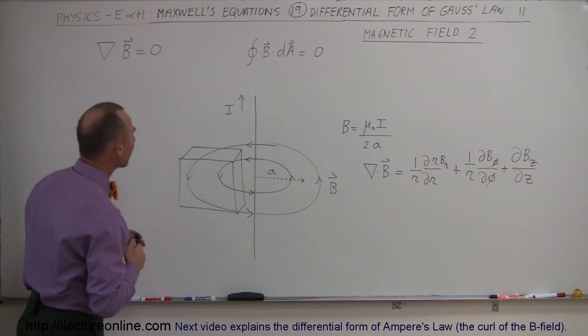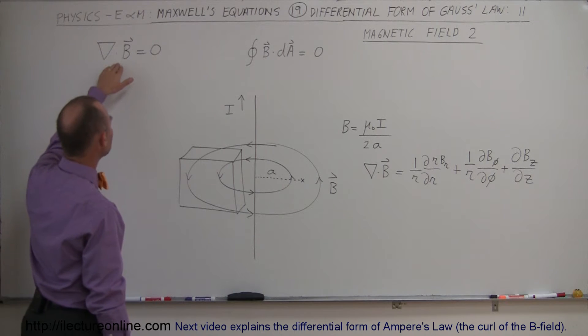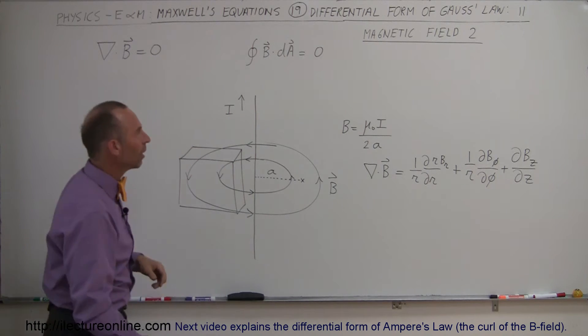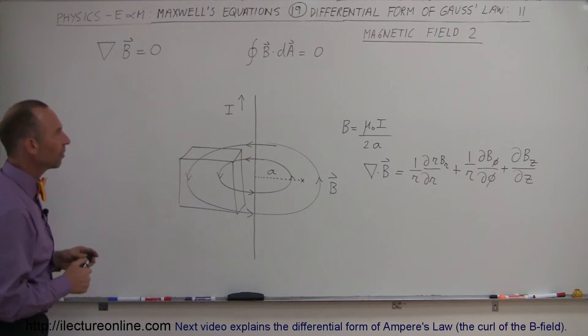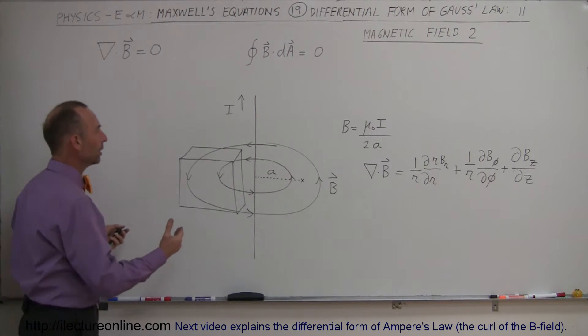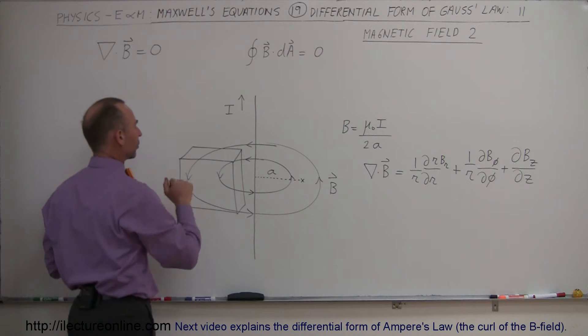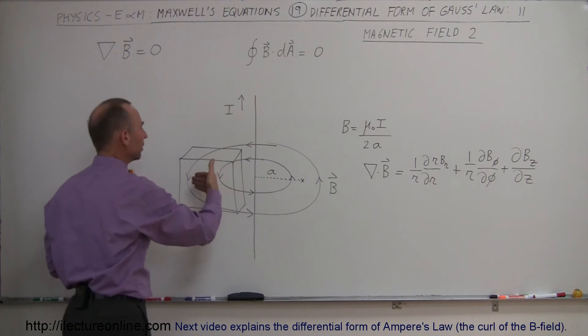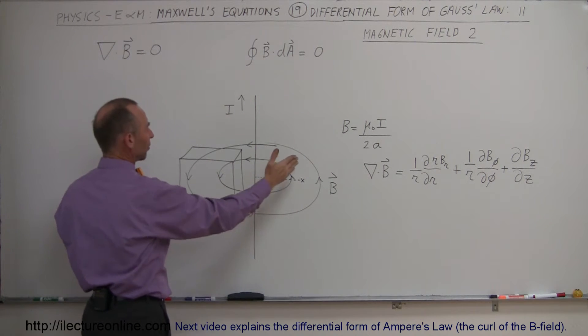So now we're trying to figure out how the differential form of Gauss's law for magnetism equates to the integral form of Gauss's law for magnetism. If we take the integral form we can say that is simply equal to the strength of the B field, that would be determined by this, times the area and you can see that because of the symmetry...